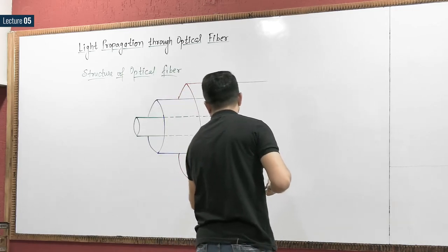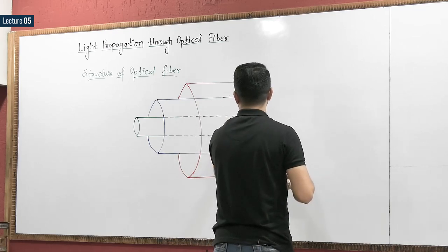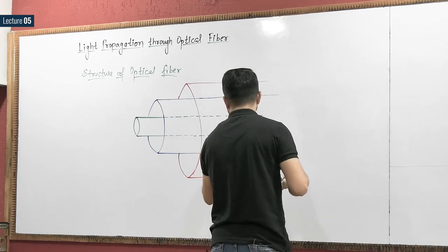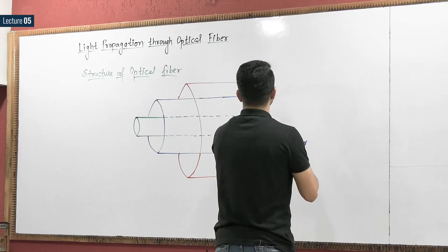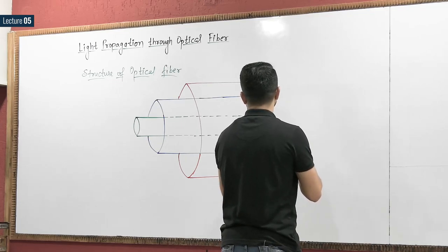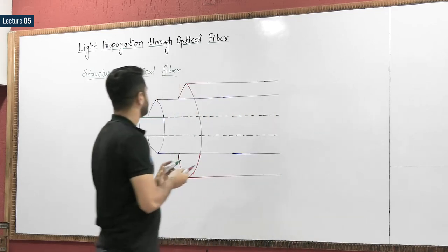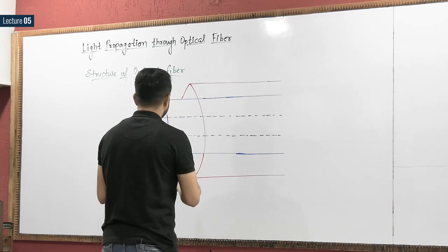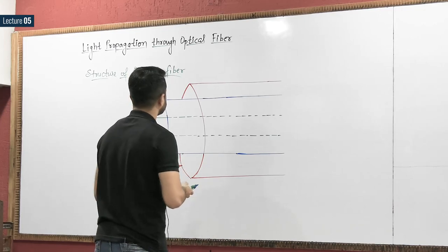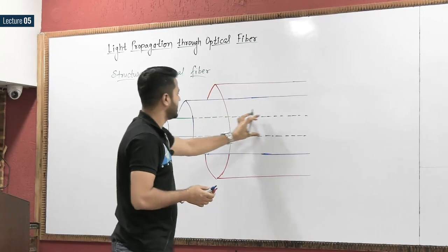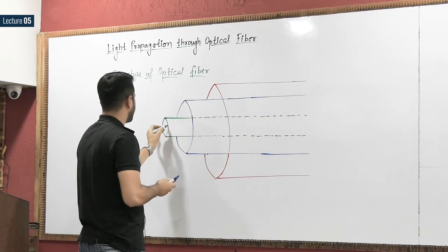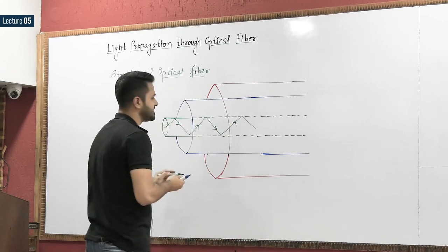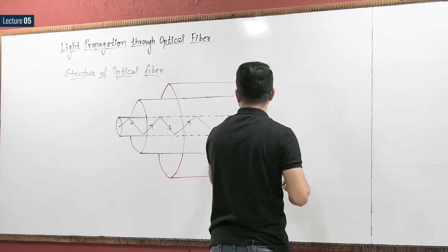This is the structure of optical fiber. This is the part in which the light propagates. Here the light is incident and it propagates by the principle of total internal reflection. This part in which the light propagates is called the core of the optical fiber.